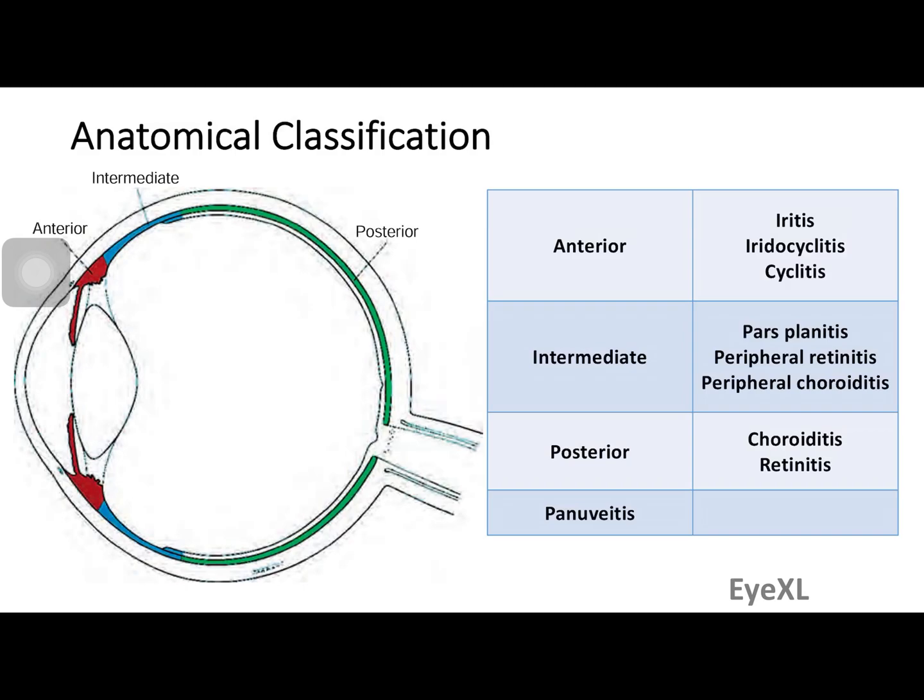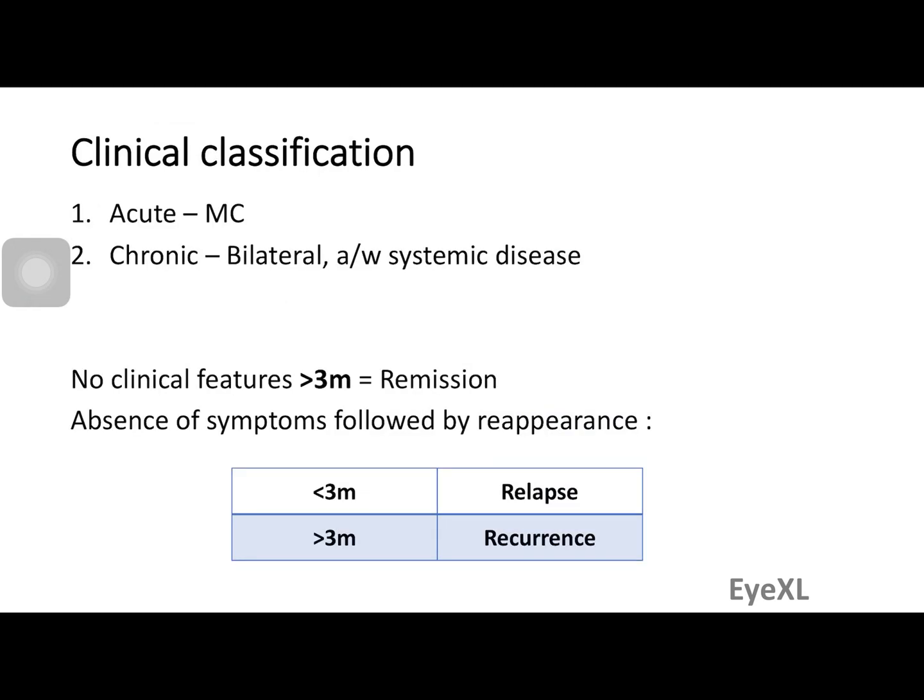Another way to classify is by clinical method. Acute uveitis is the most common, and even amongst that, acute anterior uveitis is the most common type. Chronic uveitis is more likely to be bilateral and associated with a systemic disease.